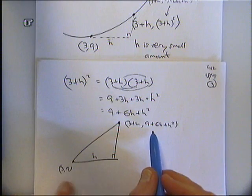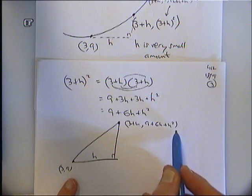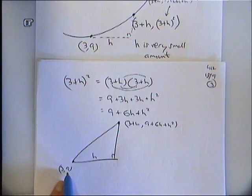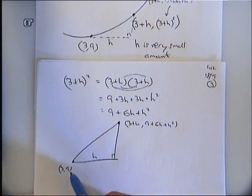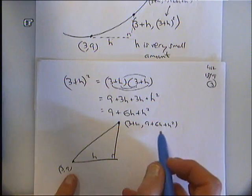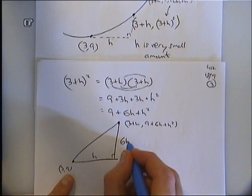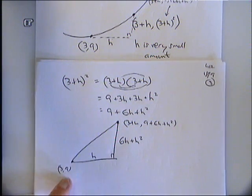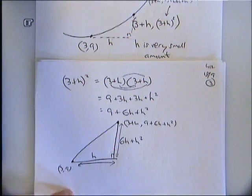What is the vertical distance between these two points? Look at the y-coordinate up here. Look at the y-coordinate here. One y-coordinate is 9 plus 6h plus h squared. One y-coordinate is 9. What is the difference between those two y-coordinates? Matthew? 6h plus h squared. OK. So that is the vertical distance. That h is the horizontal distance.